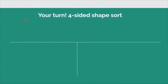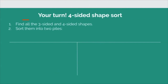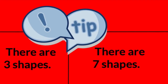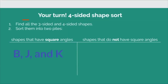Now it's your turn. Grab all the shapes that have three sides and four sides and sort them into two piles: shapes that have square angles, and shapes that do not have square angles. Press pause and press play when you've sorted them out and are ready for the answers. If you found shapes B, J, and K, you are correct — these shapes have square angles. All the other shapes do not have square angles.